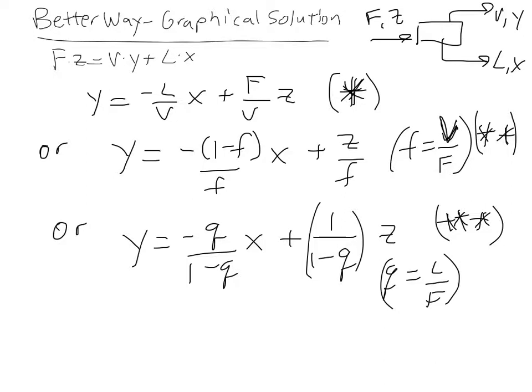So we have three different equations. They're basically the same equation where I'm just using different parameters. In one, this first equation, I have it in terms of F over V and L over V. In the second equation, I've eliminated F, V, and L.